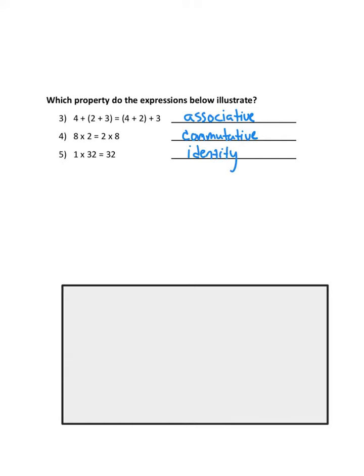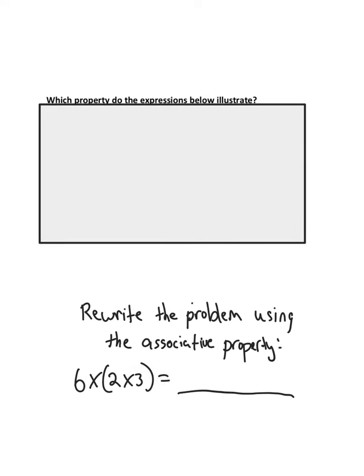All right, so now here's what you must do. You must do the bonus problem down below, so I'm going to slide this up. Here's what you've got to do: it says rewrite the problem using the associative property. So you have 6 × (2 × 3) with the 2 × 3 in parentheses.